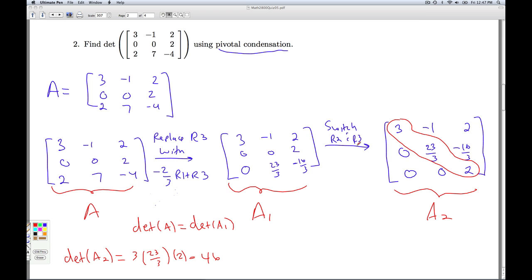And going from A1 to A2, though, I switched two rows. That tells me that the determinant of A2 is the opposite of the determinant of A1. So I put these two facts together.